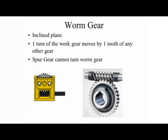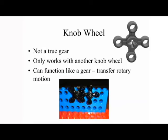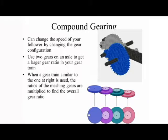The worm gear acts like an inclined plane — one turn of the worm gear moves one tooth on any other gear. Spur gears cannot turn a worm gear. The knob wheel is not a true gear and only works with another knob wheel, but can function like a gear for transmitting rotational motion.